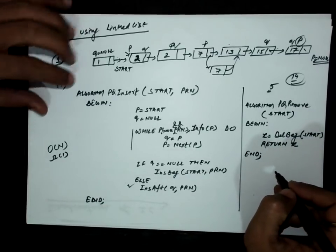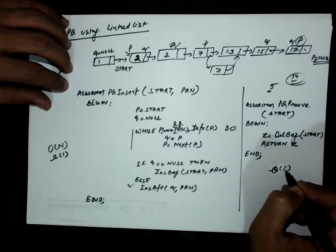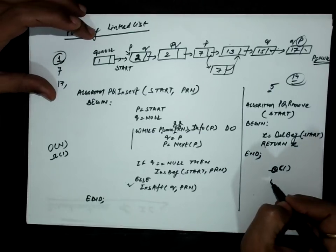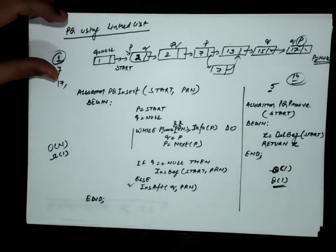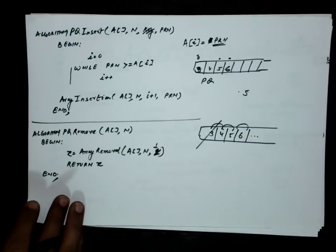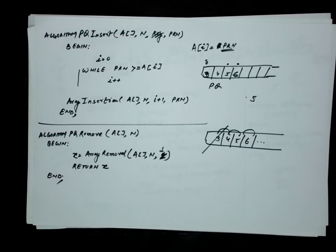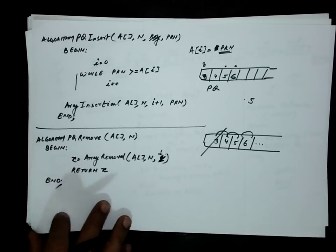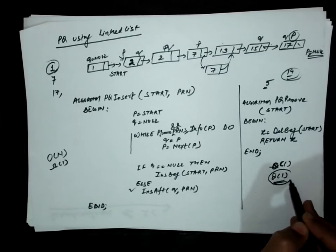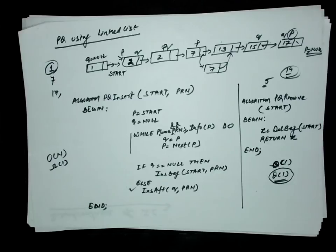For the removal operation, the complexity is always constant — Θ(1) — because we always remove the first element with no comparisons needed. This is an improvement over the array-based implementation, where both insertion and removal required O(n) shifting. Although insertion complexity is still O(n), we have achieved significant improvement in the removal function, which now runs in constant time.